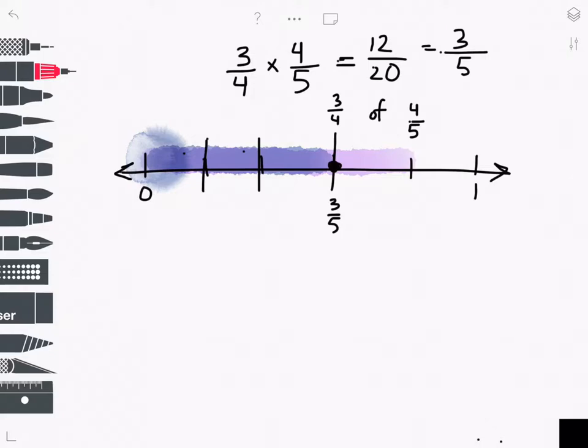And my point on the number line is 3/5. I can also model this fraction multiplication problem using an area model. So I'll start with a rectangle and divide that rectangle into fifths.